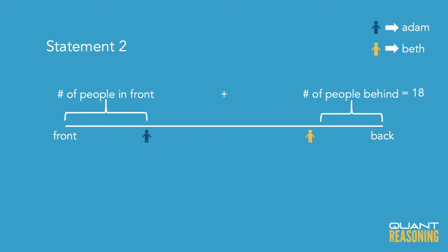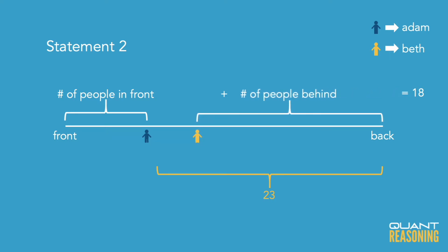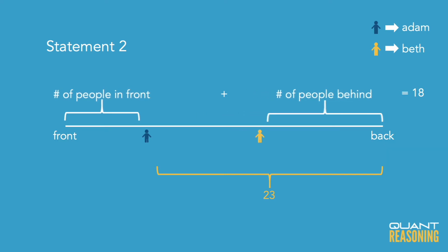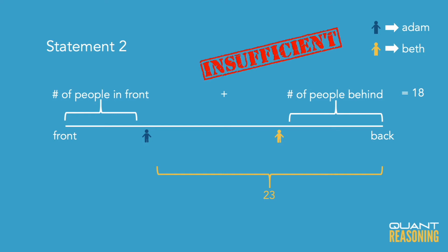A and D are gone, and we're down to BCE. Statement two on its own tells us how many people are behind Adam, but we wanted to know how many people are behind Beth. If we knew how many people are between Adam and Beth, we could figure it out. But all we know is that 23 are behind Adam — we don't know where Beth is standing within those 23, so we don't know how many people are behind Beth. Statement two is not sufficient on its own either, and we can eliminate B.